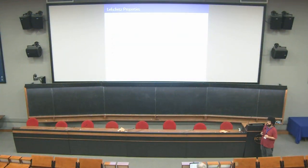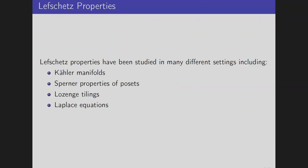Those properties that we call the Lefschetz properties have been studied in many different settings. Some of them include color manifolds in complex geometry, Sperner properties of posets in combinatorics, some interesting tilings also in combinatorics, and even in differential geometry people have found applications of Lefschetz properties on the Laplace equations.